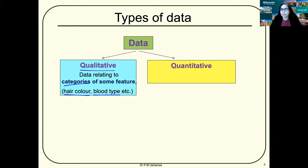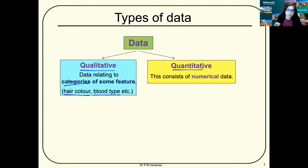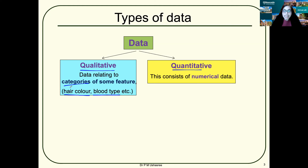Now, what is quantitative data? As the term indicates — quantity — you can quantify these data using numbers. Quantitative data are data that can be represented in numbers. When you can measure something and give it a number value, it is quantitative data. When you can classify or categorize something, it is qualitative data.